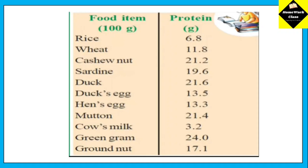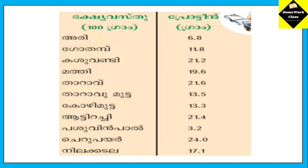This is how many calories we have in our food diet. We have added protein content in this chart: rice is 6.8, wheat is 11.8, green gram is 24, mutton is 21.4, duck is 21.6, and cashew nut is 21.2.